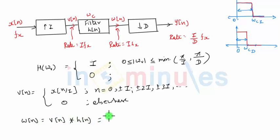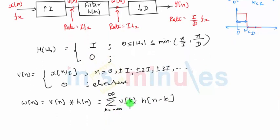When you do this convolution, it will be nothing but V(k) into H of n minus k, where k will vary from minus infinity to plus infinity. Let us replace for V of k here. V of k is nothing but X of n by i, so it will become X of k by i into H of n minus k, where k will vary from minus infinity to plus infinity.